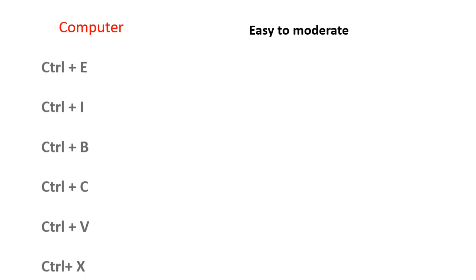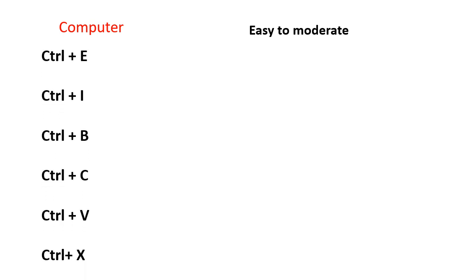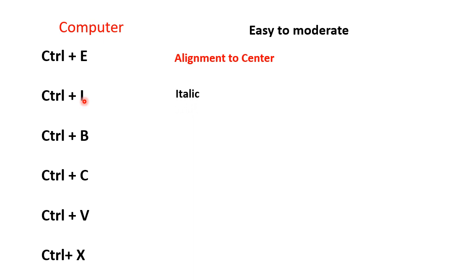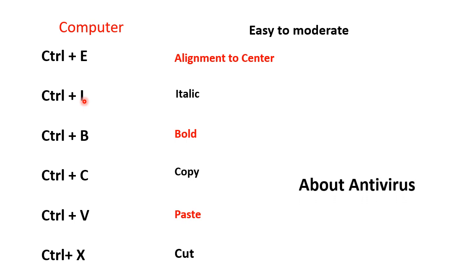Computers पे आ जाते हैं — इसका level easy to moderate था। 5-6 shortcut keys पर questions थे। Control C (copy), Control E (alignment to center), Control R (align right), Control L (align left), Control I (italics), Control B (bold), Control V (paste), Control X (cut)। Antivirus के बारे में भी question था।